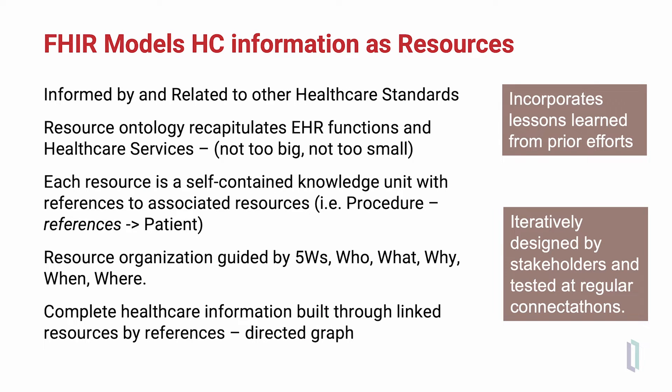FHIR models healthcare information as these resources. They are informed by and related to other healthcare standards. The HL7 organization has produced over 300 healthcare standards previously, and the lessons learned from these standards are incorporated into the FHIR specification. The resource ontology recapitulates the EHR functions that we're familiar with, and resource organization is guided by the five W's — who, what, why, when, and where did healthcare take place. And with linking between FHIR resources, the complete healthcare information of an individual can be represented as what is referred to as a directed graph.